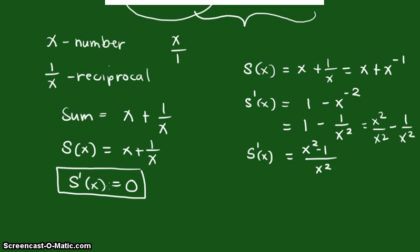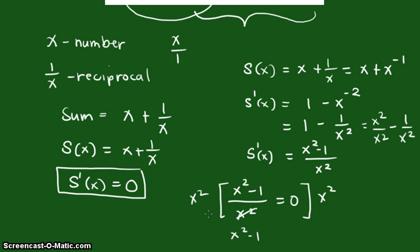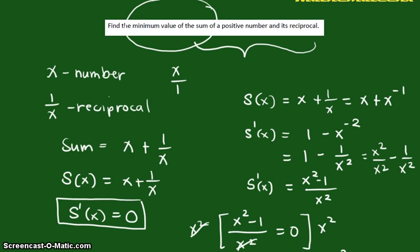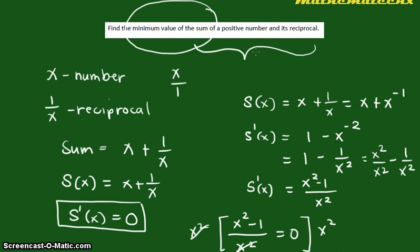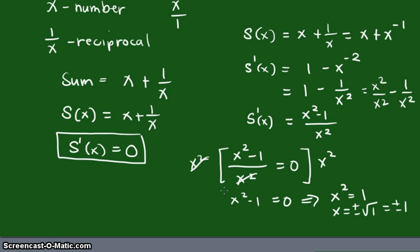We want where S'(x) equals 0. Setting the derivative equal to 0 and multiplying both sides by x squared gives x squared minus 1 = 0, so x squared equals 1, meaning x = plus or minus 1. We have two possible answers, but since the problem asks for a positive number, we don't need x = -1. What we need is x = 1, and this value will give the minimum value of the sum.